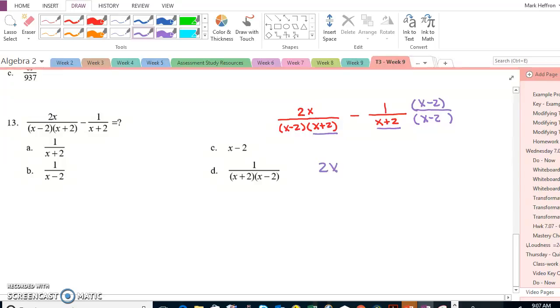And so now I have 2x minus 1 times x minus 2, all over x minus 2, x plus 2.